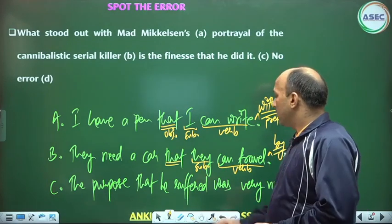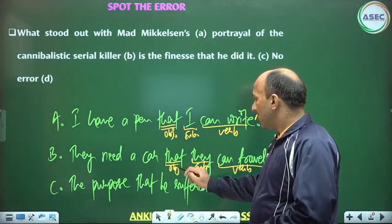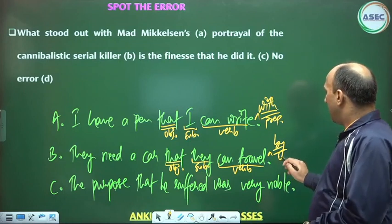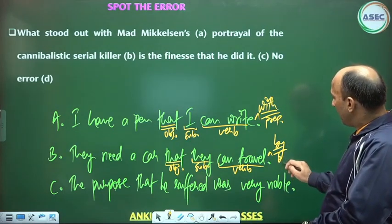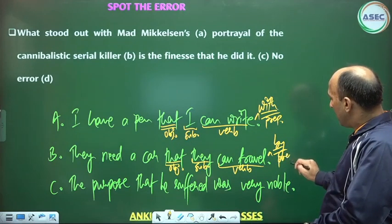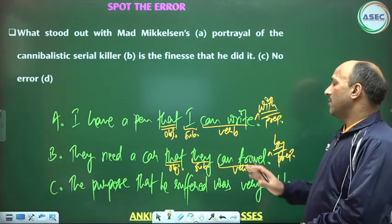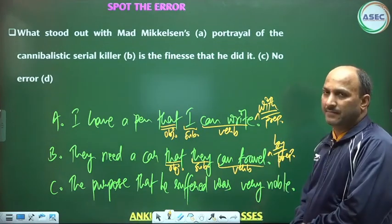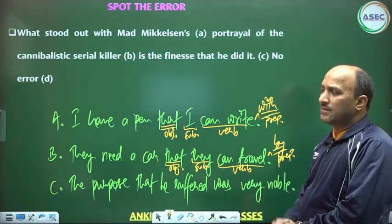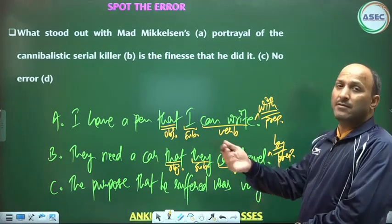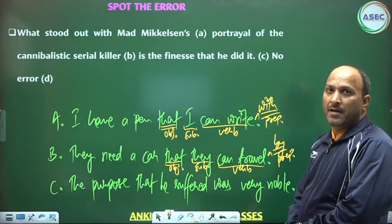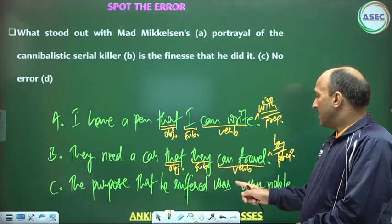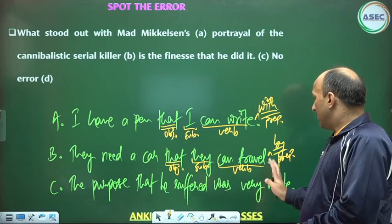That is a means of transportation — that preposition. Sorry — the object: they need a car that they can travel by car. The purpose that he suffered was very noble.